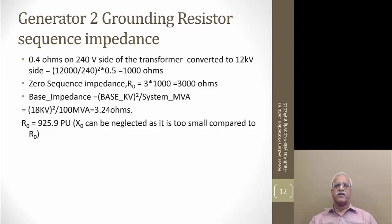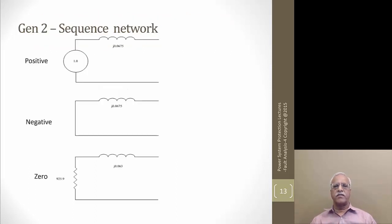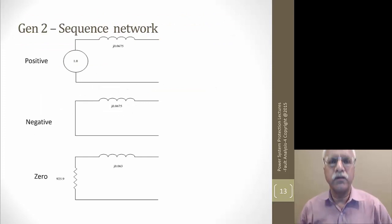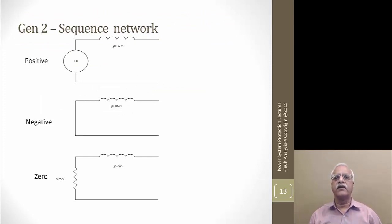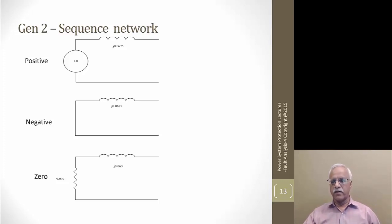Generator two is grounded through 0.4 ohms on the 240 V side of a transformer with a primary at 12 kV. Going through the same process, it turns out to be 1000 ohms on the 12 kV side, and because it is connected at the neutral it gets multiplied by 3, becoming 3000 ohms. Converting to 18 kV base, R0 turns out to be 925.9 per unit — almost infinite compared to the rest of the impedances. The zero sequence network for generator two is almost purely resistive.